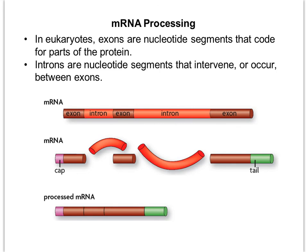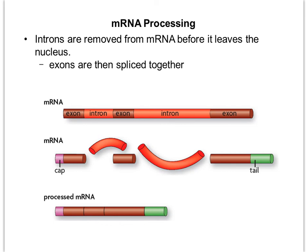The last step is removing something called introns. In eukaryotes, exons are the nucleotide sequences that actually code for parts of the protein — you can remember that exons are expressed. Introns are called intervening sequences and need to be removed before the mRNA can be translated into a protein. After the two introns are removed, the mRNA is much shorter, and then the exons get spliced together, giving us the final processed mRNA.